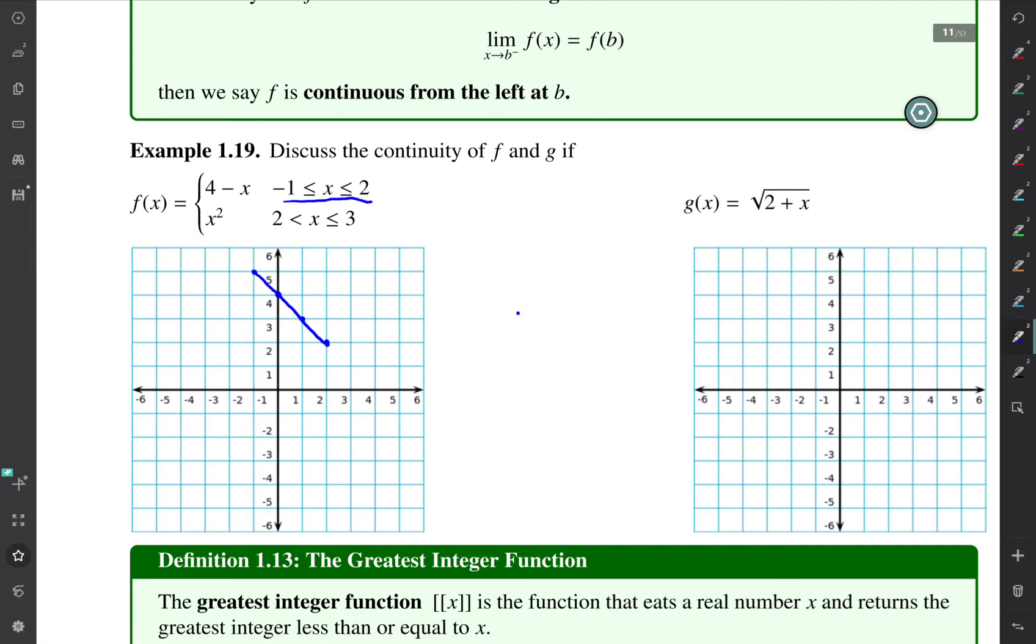And then when x is greater than 2 we have x squared, so that would be 2, 4, but not including the point 2, 4, and it'd be a parabola cupping up towards 3, 9. So I'm going to put this point, so this is 3 comma 9.